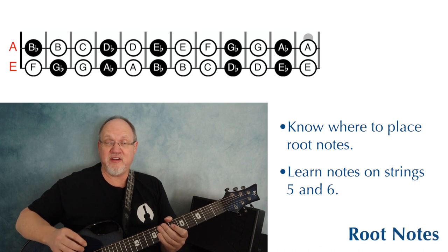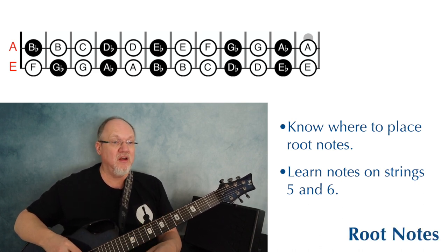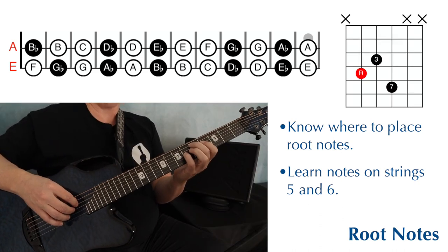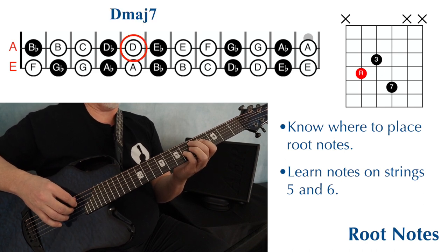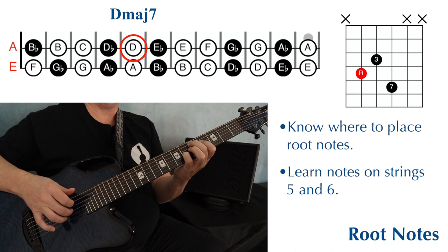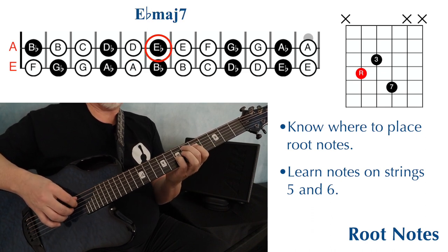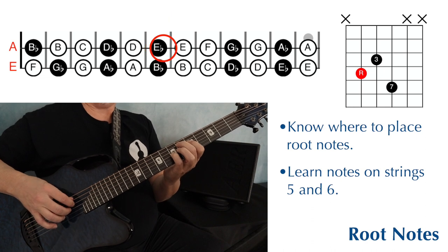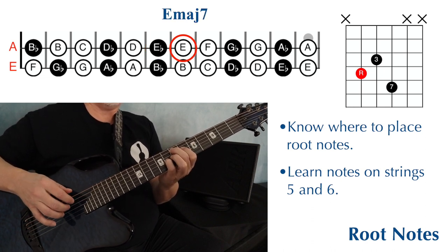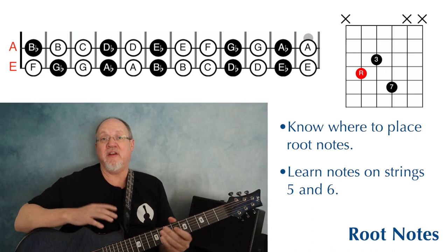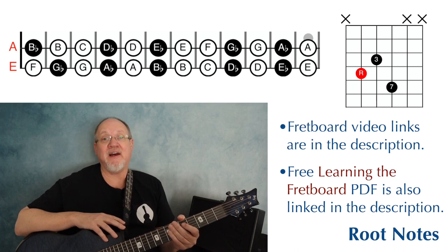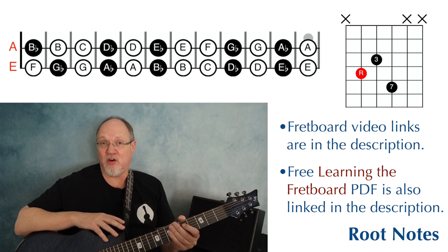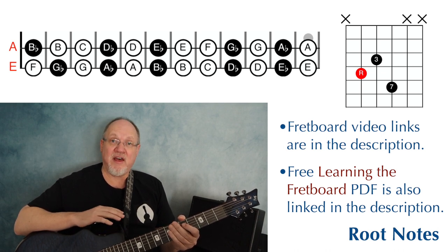To use these shell voicings, you need to know where to place the root of each chord. For example, to play a D major seven shell voicing with the root on the fifth string, place the root on string five, fret five — the note D. Moving it up a fret gives E flat major seven; up again gives E major seven, and so forth. At the very least, you need to know the names of the notes on the fifth and sixth strings. There are videos on learning the fretboard and a free PDF called Learning the Guitar Fretboard — links in the description.